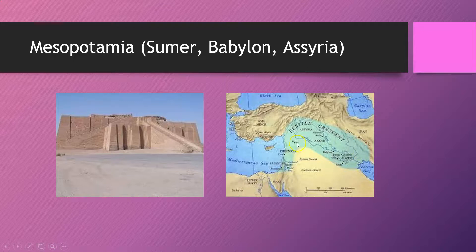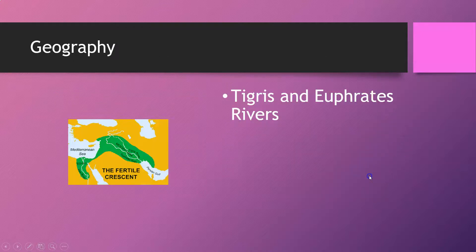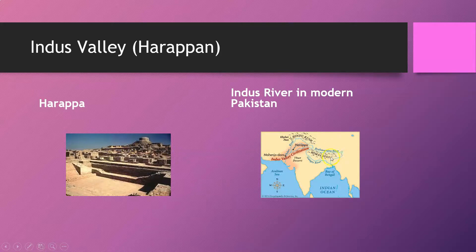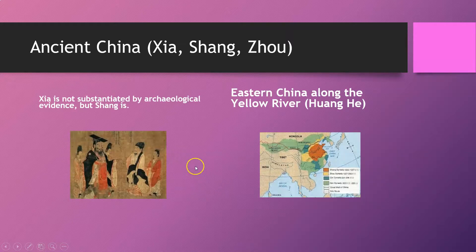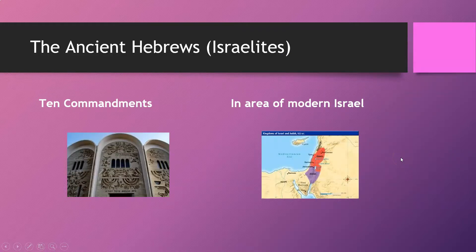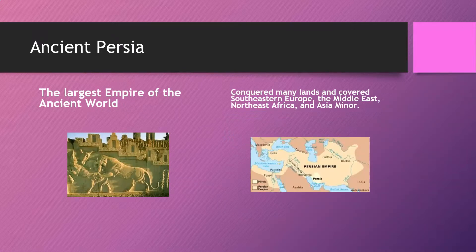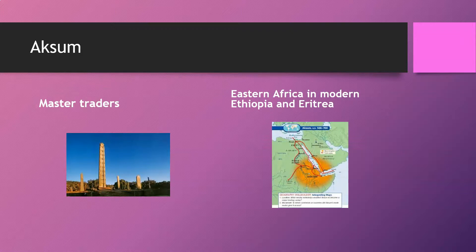For Mesopotamia, you'll see the Tigris, Euphrates, Fertile Crescent, and a Ziggurat. Ancient Egypt has the Sphinx, the Pyramids, and the Nile. The Indus Valley has the Indus River — we're talking Pakistan and India. Ancient China refers to the old dynasties along the Yellow River, not modern China. The ancient Hebrews, or ancient Israelites, gave us things like the Ten Commandments and the creation of glass. The Hittites were masters of metal in modern-day Turkey. Ancient Persia was huge and powerful. And the Aksum, or ancient Ethiopians in northeast Africa, were master traders.